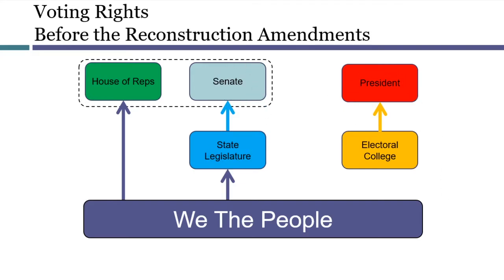When the Constitution was ratified in the 1780s, most states severely limited the right to vote. In most of them, only adult white males could vote, although New Jersey briefly experimented with giving women the right to vote, and some states allowed free people of color to vote.